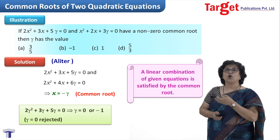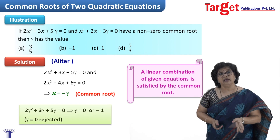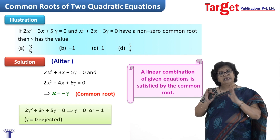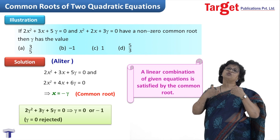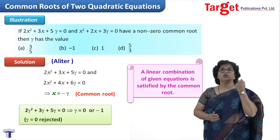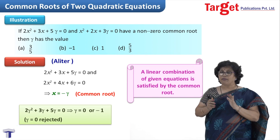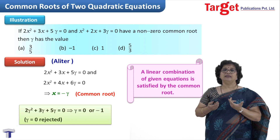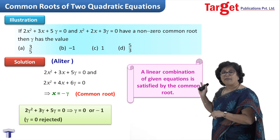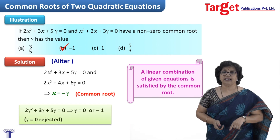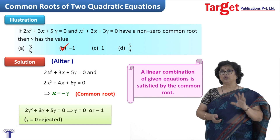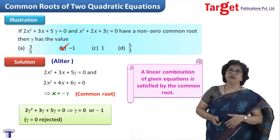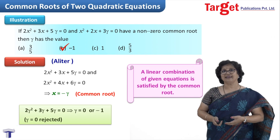Since the problem states a non-zero common root, γ = 0 is rejected and we arrive at γ = −1. In competitive examinations, you must read the question carefully so you know which answer to pick and which to leave out. Here I choose γ = −1 because a non-zero common root was required. I think this illustration is good enough for you to understand how to deal with the common root concept. Next time I'll come with something new — till then, stay tuned and keep practicing. Thank you.